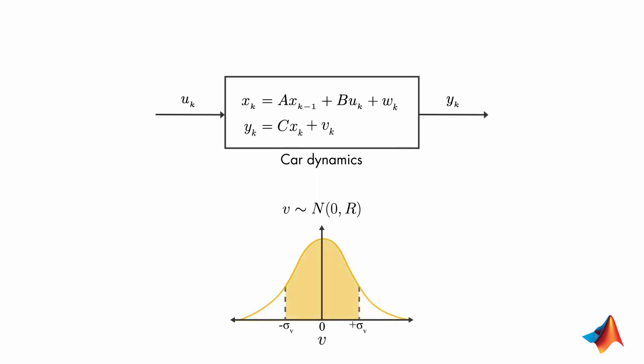Since we have a single output system, the covariance r is scalar and is equal to the variance of the measurement noise.